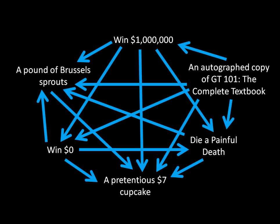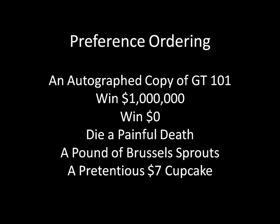Having rational preferences — having preferences that are both complete and transitive — allows us to represent this in a much simpler way: a preference ordering, or simply a list. This individual most prefers an autographed copy of Game Theory 101, the complete textbook. The next favorite outcome is winning a million dollars, after that is winning zero dollars, after that is dying a painful death, after that is a pound of Brussels sprouts, and after that is a pretentious seven dollar cupcake. If an individual has rational preferences, all they need to do is submit us a list with the top outcome at the top and the worst outcome at the bottom, and we would be able to draw that mapping if we really wanted to.